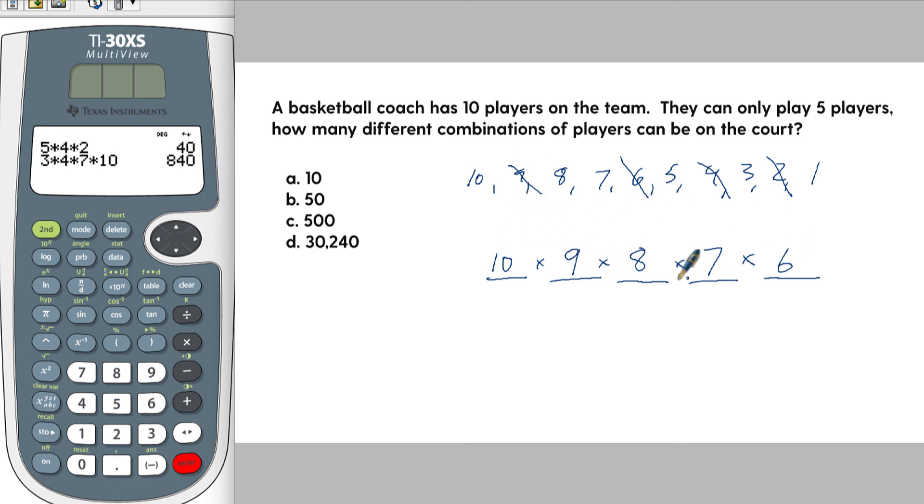This one's slightly more advanced than what you might see on the GED, but I did it to prove the point. So let's put this in the calculator over here. Ten times nine times eight times seven times six. Let's see what we get. And you end up getting thirty thousand two hundred forty, which is D. It seems extraordinary, right? But that's how it works.